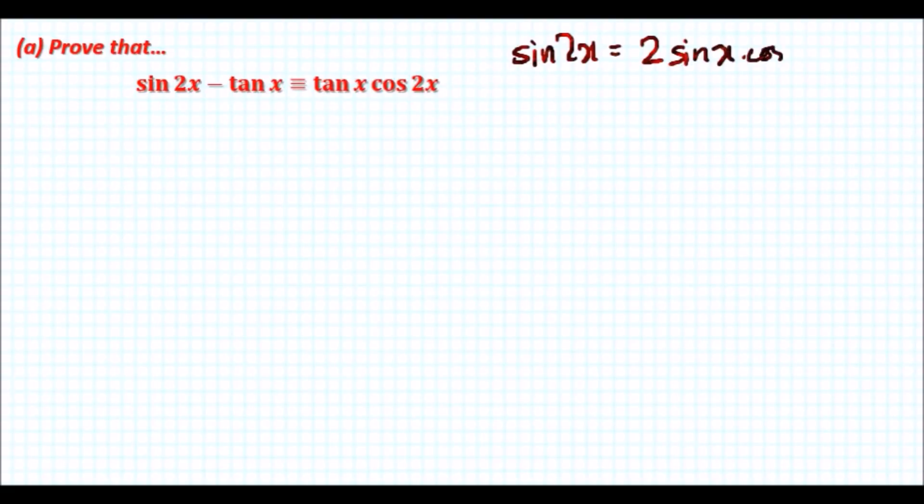We can say that sin 2x itself can be expanded to 2 times sin x multiplied by cos x, so two lots of them. Whereas cos 2x can be expanded in multiple ways.